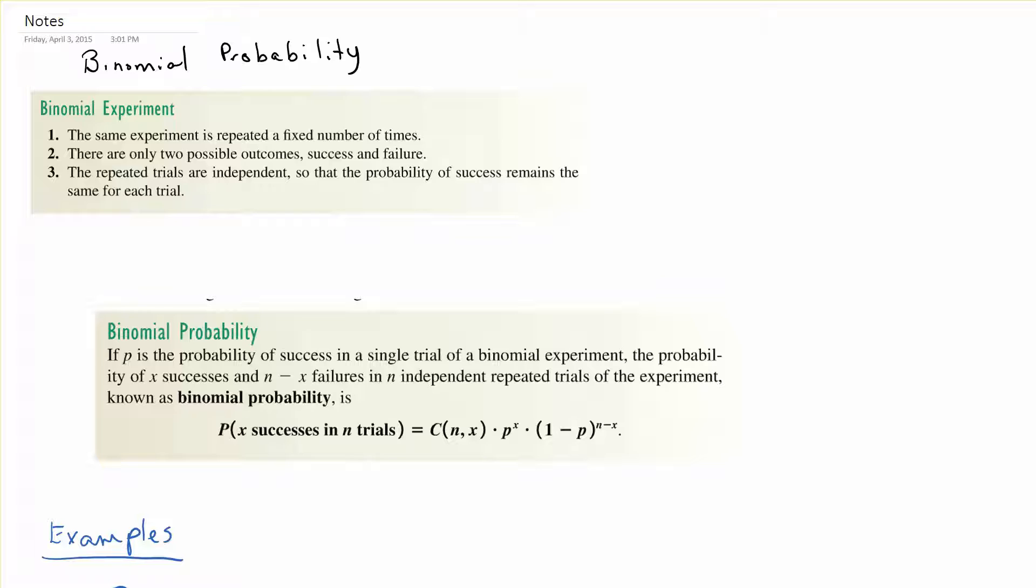The binomial experiment is the same experiment repeated a fixed number of times and there's only two possible outcomes: success and failure. The repeated trials are independent so that the probability of success remains the same for each trial.